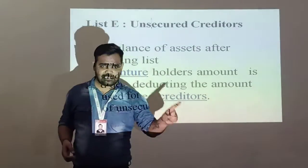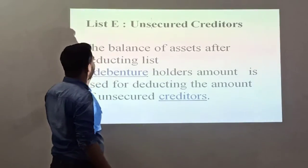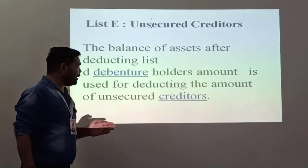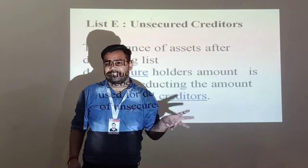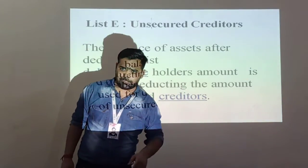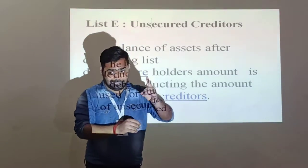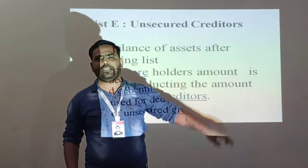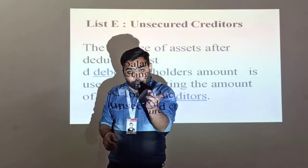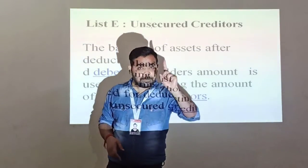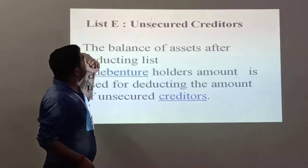These are the last list of creditors. After deducting the unsecured creditors, the balance of assets after deducting List B and the debenture holder amount is used for the unsecured creditors. Unsecured creditors are not secured by any security. After paying the unsecured creditors, the balance of List A and List B is used for the owners of the company - preference shares and equity shares. But before paying equity shares, we have to pay the preference shares first.